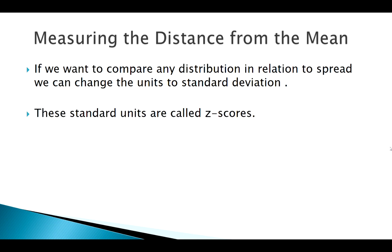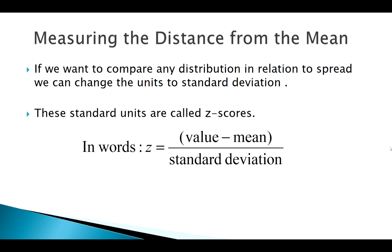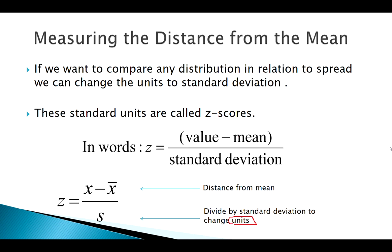This is what we call a z-score. So to find a z-score, you take whatever value you're interested in, subtract the mean of that distribution, and then divide by the standard deviation. So you'll have things in units of standard deviation, or sometimes called standardized units.